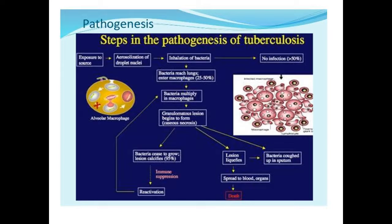That granuloma will be formed inside the lung. Granuloma is a type of lesion — a mass of live and dead bacilli surrounded by a wall of macrophages. If the bacteria ceases or fails to grow, then that granulomatous lesion will calcify in 95% of cases. After calcification, there will be no infection unless immunity is low. In case of granuloma which liquefies, the tubercle bacilli will spread via blood to other organs, causing extrapulmonary tuberculosis. Also, when the person coughs, the bacteria will be present in the sputum.